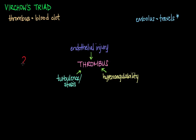Thrombi can form anywhere within the cardiovascular system — in the chambers of the heart, on the valves between the four chambers of the heart, in the coronary arteries that feed the heart, or in other arteries and veins in the system.